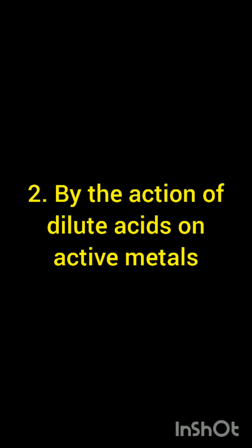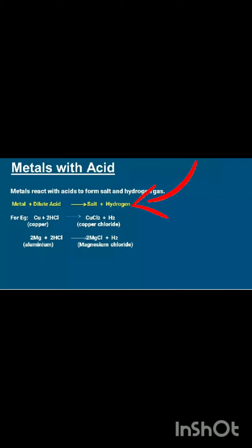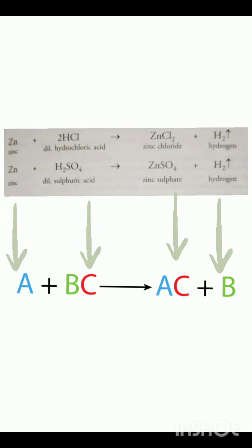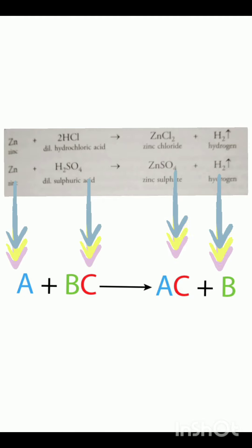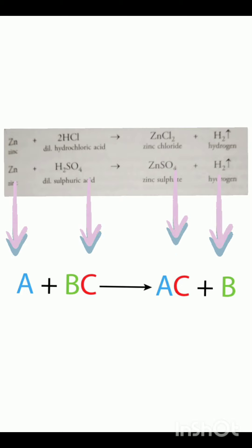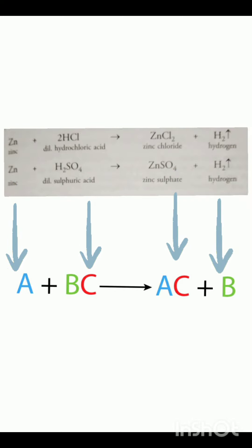The next method for the preparation of hydrogen is by the action of dilute acids on active metals. Metals react with dilute acid to produce a salt and hydrogen. This reaction is an example of a displacement reaction. For example, zinc plus hydrochloric acid gives zinc chloride plus hydrogen. In this reaction, zinc (A) reacts with HCl (BC), displacing hydrogen to form zinc chloride (AC). The hydrogen is displaced to form a salt.